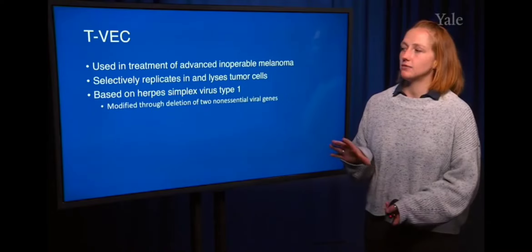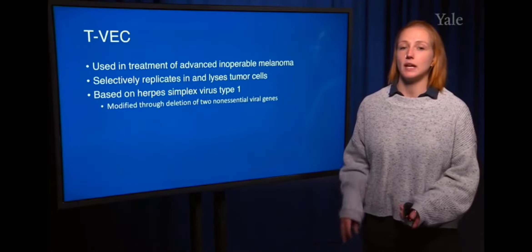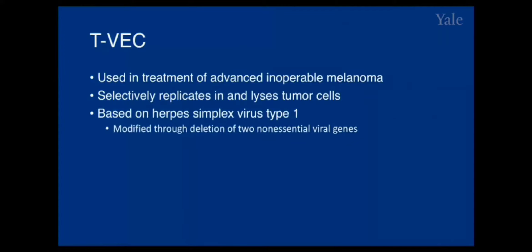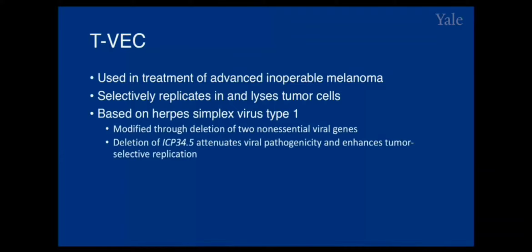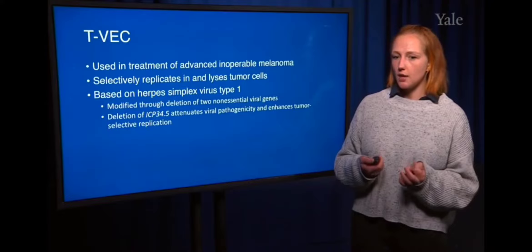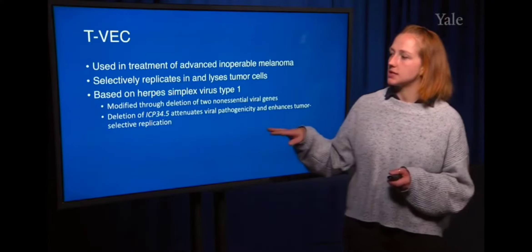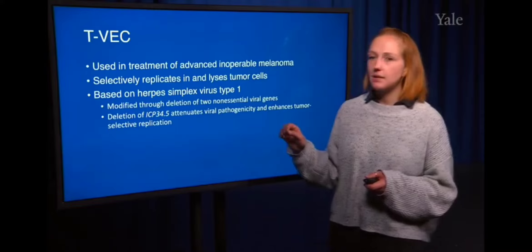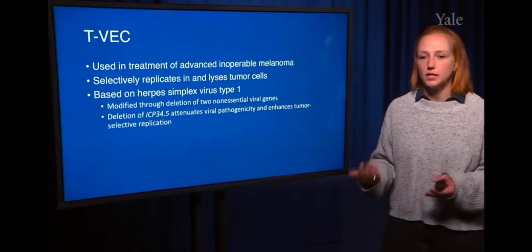TVEC has three major modifications. First, there are two non-essential viral genes that have been deleted. The first is ICP 34.5, which was deleted. This attenuates viral pathogenicity and enhances tumor selective replication — it makes the virus less pathological. ICP 34.5 is really important in facilitating the initiation of protein translation, making protein expression happen more readily.